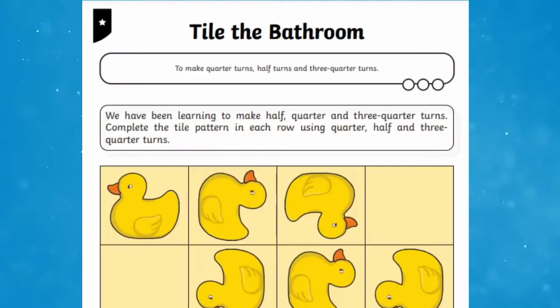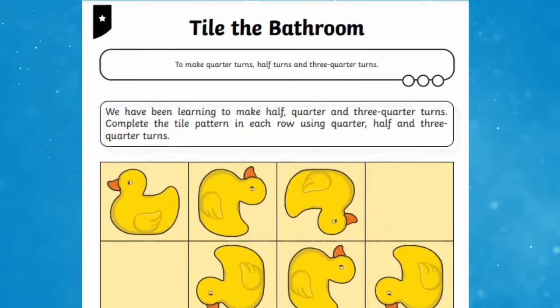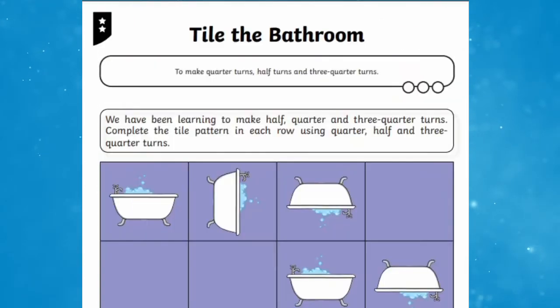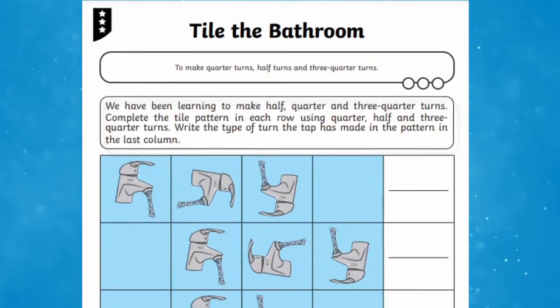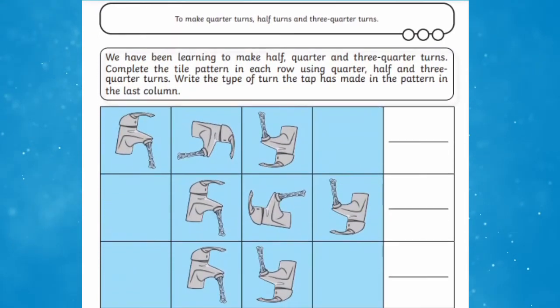Lastly, this tile the bathroom activity is a quick and easy way to teach children about making quarter turns, half turns and three quarter turns. They are also differentiated into three ability levels to help support and challenge all learners.